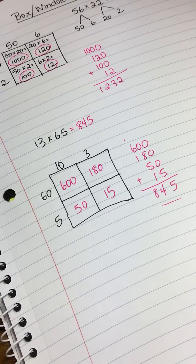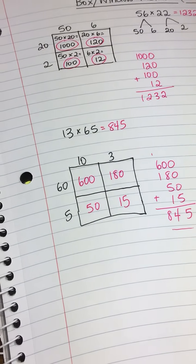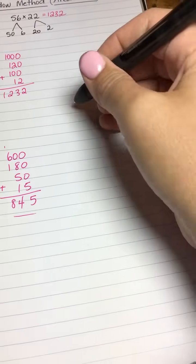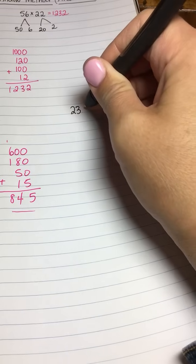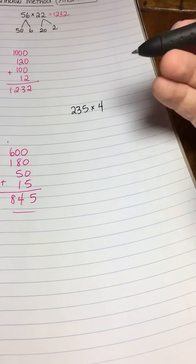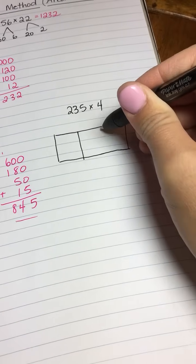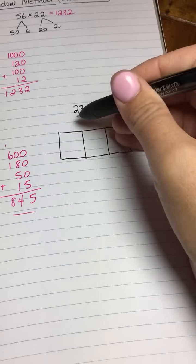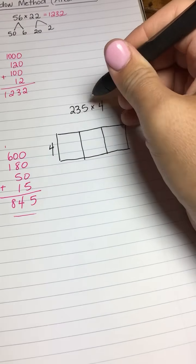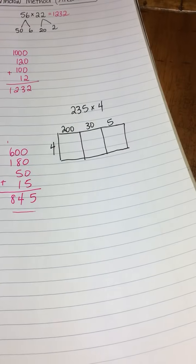Now what happens if we have more than two digits in our factors? That's easy—we just make a bigger box with more rows or more columns. Suppose we have 235 times 4. In this one, we have three digits times one digit, so we're going to make a box that is 3 by 1. We'll do one row and three columns. We'll write our 4 over here, and now we're going to expand our 235 up here.